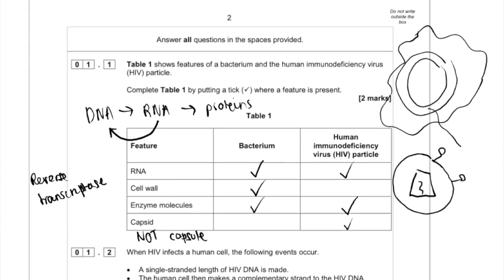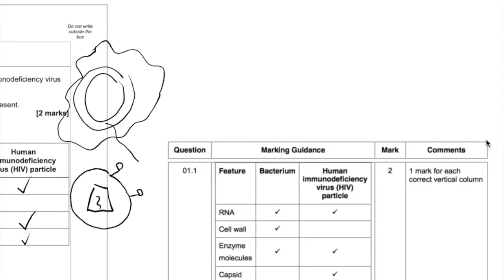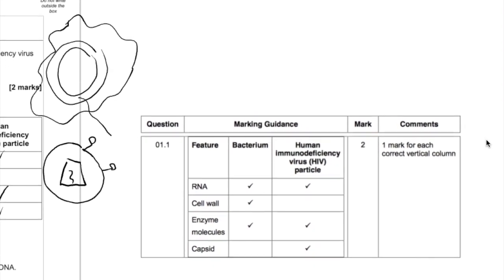Let's have a look at the mark scheme and see how they allocate the marks. They've been quite harsh here, and actually students generally did quite poorly in this question, because the way they do it is they give one mark for each correct vertical column. So you have to know all the ones about a bacterium and all the ones about HIV to get the marks.